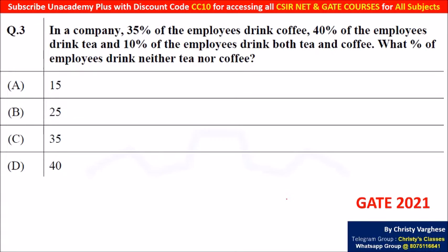If you think about it, there are three groups of people here: zero-drink people, meaning no coffee and no tea; exactly one-drink people; and two-drink people. These three groups added up should total 100% — that is the idea.